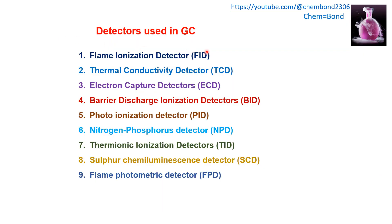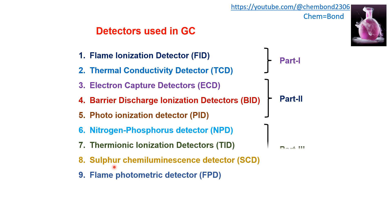Detectors used in GC include: flame ionization detector (FID), thermal conductivity detector (TCD), electron capture detector, barrier discharge ionization detector, photo ionization detector, nitrogen phosphorus detector, thermionic ionization detector, and flame photometric detector. We will discuss the first two types in part one of the lecture, the next three types in part two, and the last four types in part three.